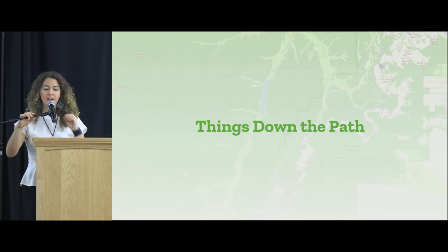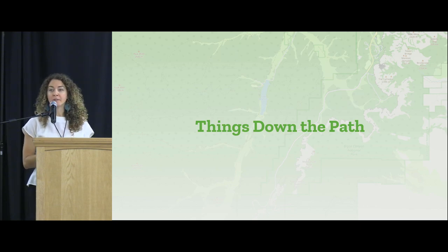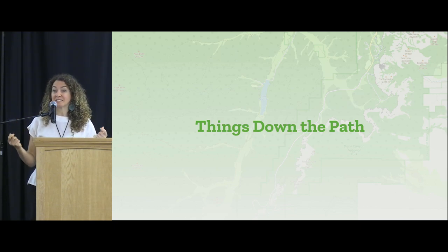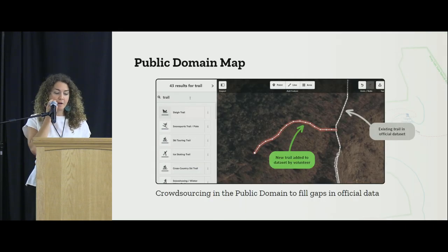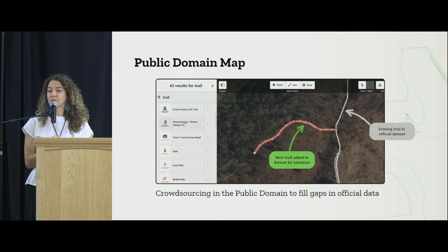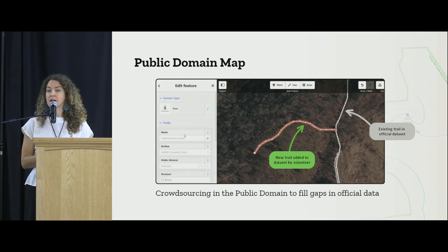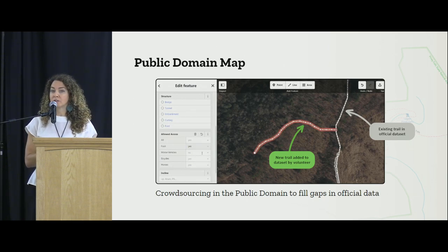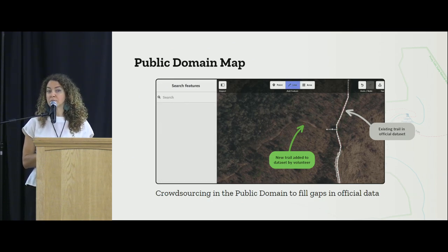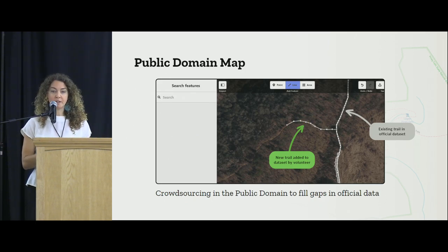Looking down the path — and there are quite a few sessions at this conference to figure out what's next — what we're addressing right now are gaps in existing trail attribute data. But one of the other problems to address is actual gaps in line data: the trails that are missing entirely. We're trying to come up with ways for that missing trail data to be added, so it can be used by both government agencies and OSM. That's where Public Domain Map comes in — we'll be talking about this later.